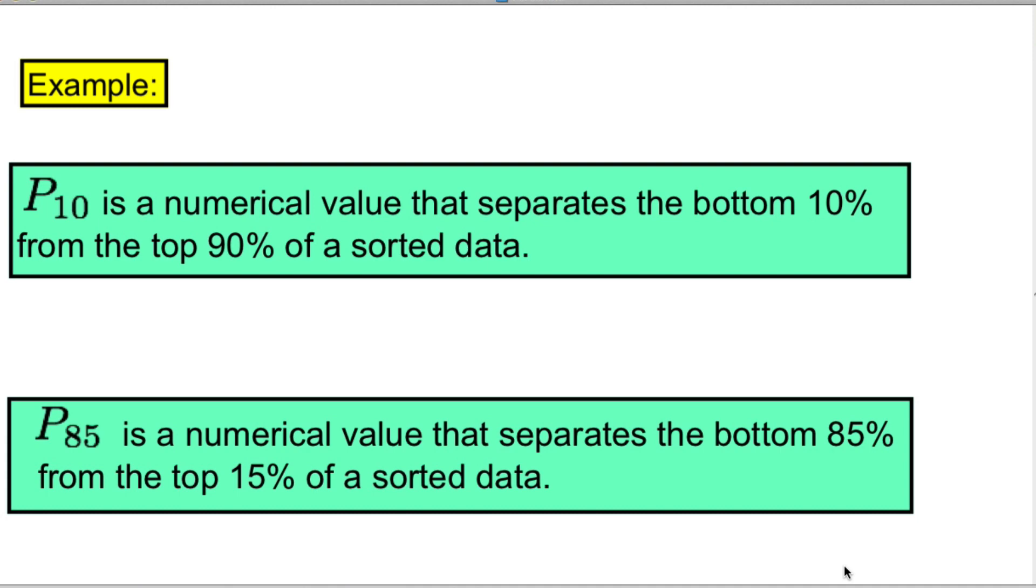And P85 is a numerical value that separates the bottom 85 percent from the top 15 percent of the sorted data.